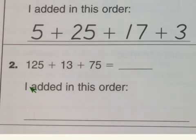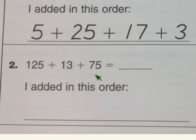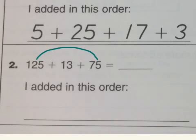For number 2, same idea here. We have three numbers — which numbers would go together first to make a multiple of 10? Here's a hint: these two numbers here will actually give you a multiple of 100, which will make this easier to add.